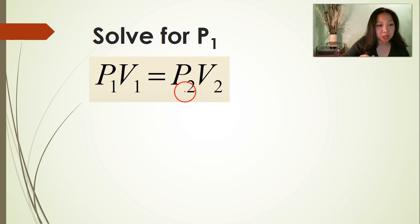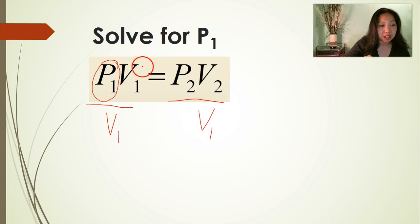Solve for P1. This is the formula that we're going to be using. Boyle's law's formula is P1 times V1 equals P2 times V2. We are going to solve for P1. We're going to circle P1. We're going to isolate P1 by dividing both sides of the equation by V1. Cancel V1. That leaves us with P1 equals P2 times V2 divided by V1.